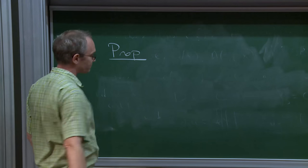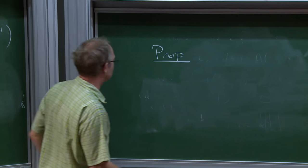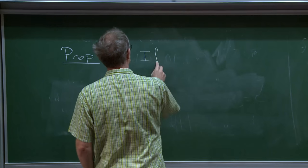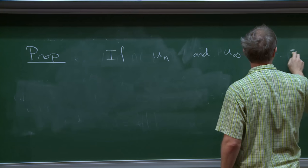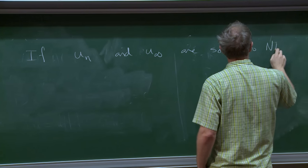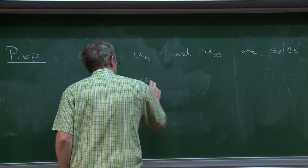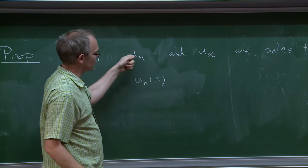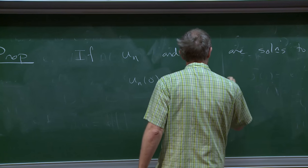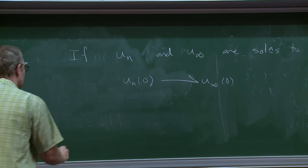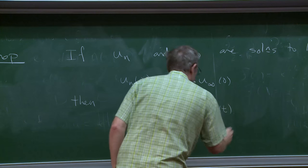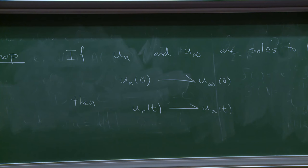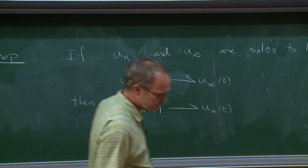I want to make a little proposition. Take our standing equation and ask: if a sequence of functions U_n and U_infinity are solutions to NLS with finite mass, and the initial data of the sequence converges weakly to the initial data of the last solution, then I want to tell you that U_n at time t converges weakly to U_infinity at time t. This engenders questions: why is it true, why would you care, and maybe why wasn't it done before?